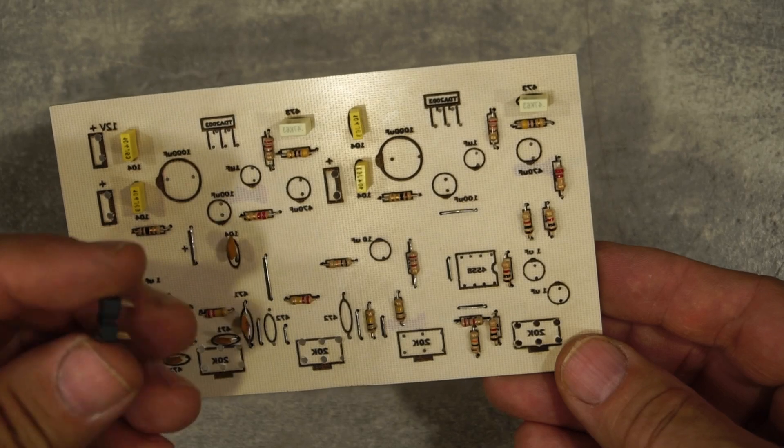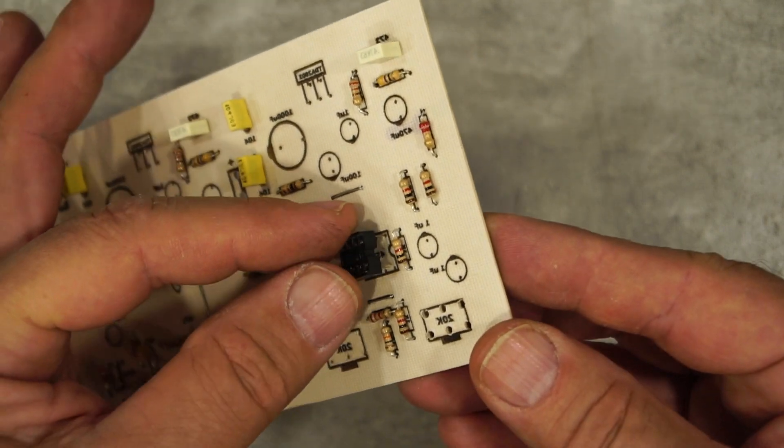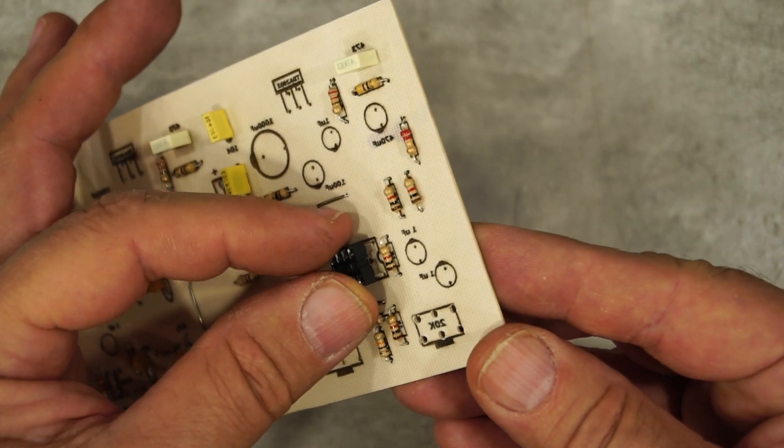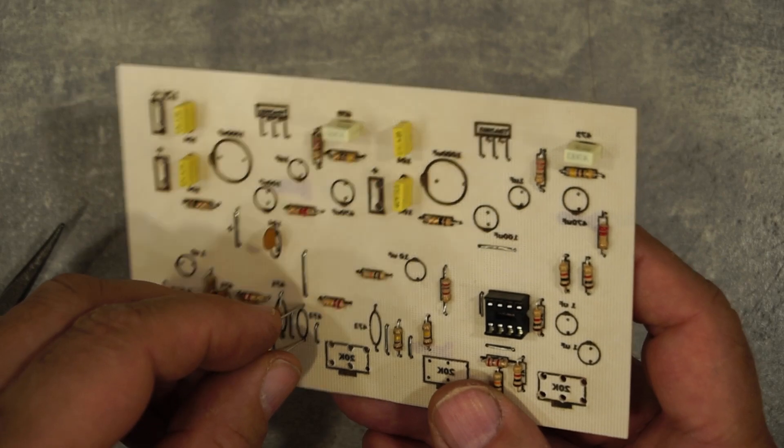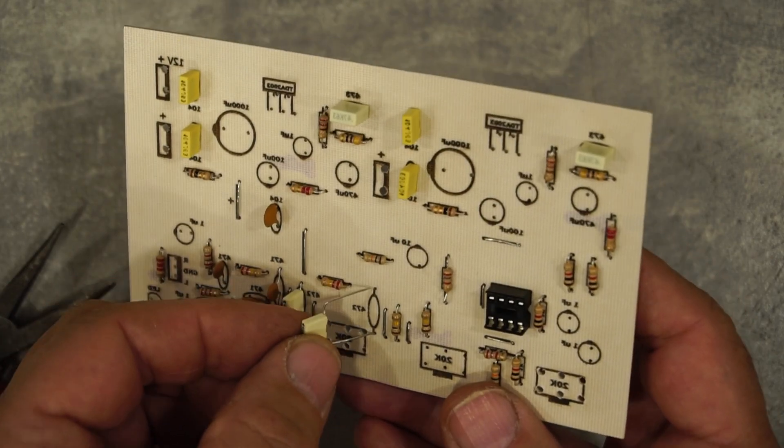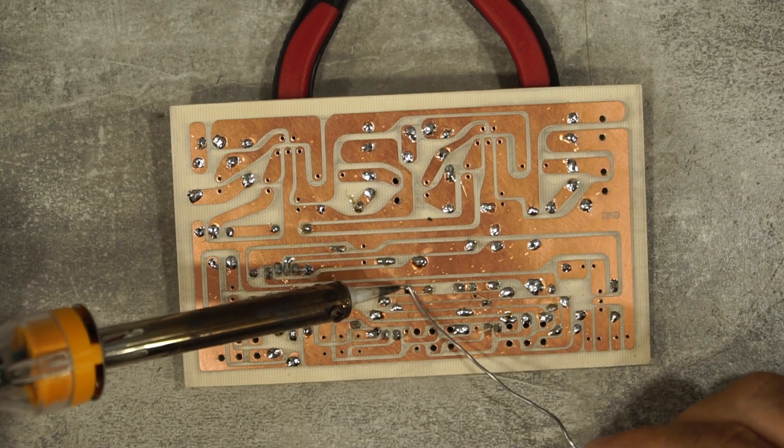I place the socket for the C4558 integrated circuit and solder it. I also place the polyester capacitors and solder them.